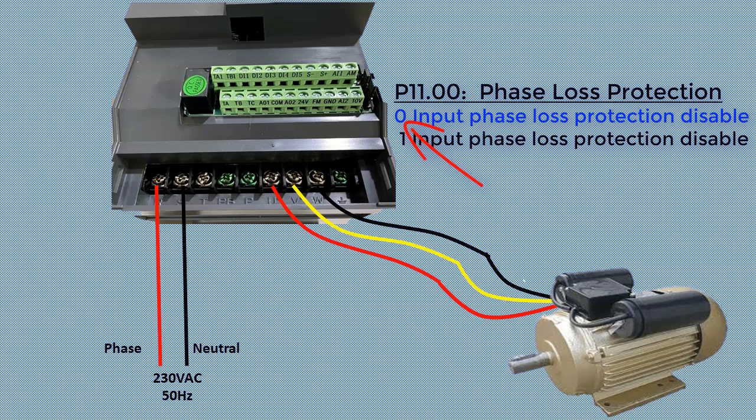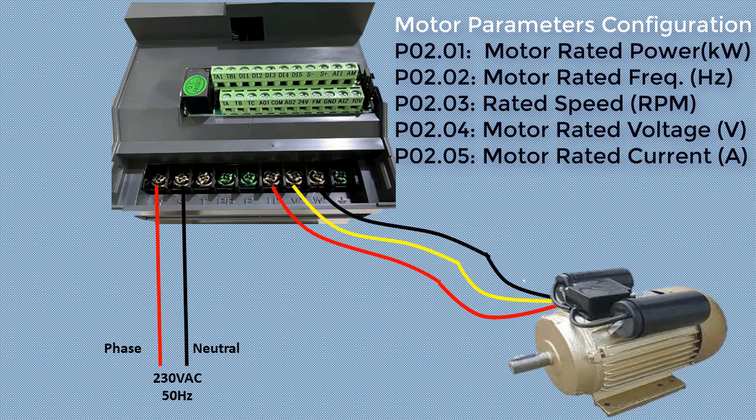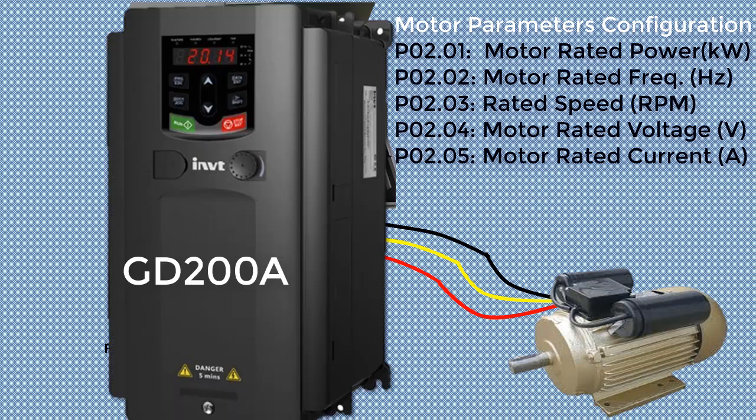You must configure the output voltage in the VFD according to the motor's nameplate rating, for example, 230 volts V in the motor parameter settings. Additionally, enter other motor parameters such as current, power, RPM, etc. For the INVTG D200 series model, the parameter number for the rated motor voltage is P02.04.